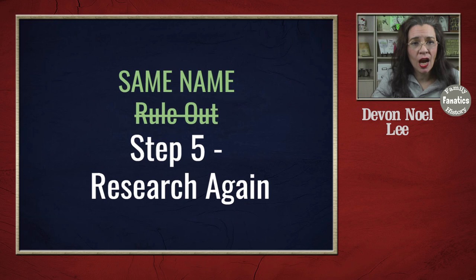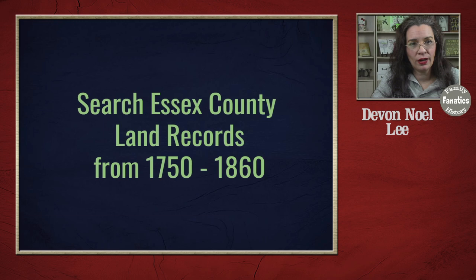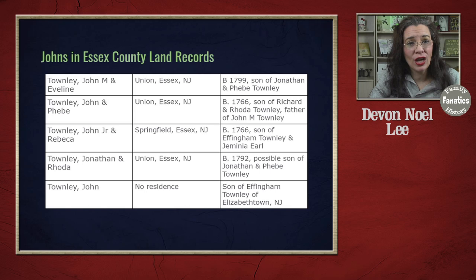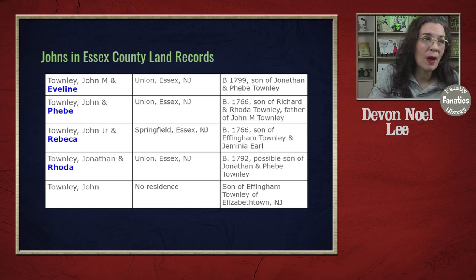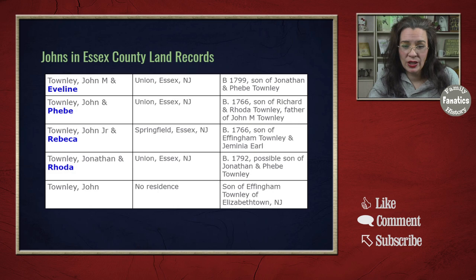The next thing I'm going to do in my same name rule out theory is not just rely on one record set. I'm going to turn to a record set that in this time period has a lot of relationship evidence — land records, which I talked about in a previous video. I searched for all of the Johns in the land records up to about 1860 and found five instances. A lot of times these Johns are connected to a wife, which is why I love land records, especially when land is being sold because the wife's name is included. We have John M. of Union, John and Phoebe of Union, John and Rebecca of Springfield, Jonathan and Rhoda of Union, and then John of nowhere who is the son of Effingham Townley.